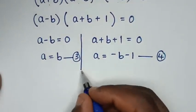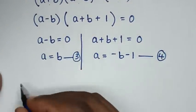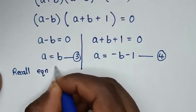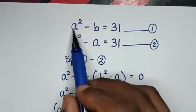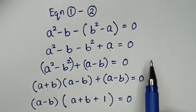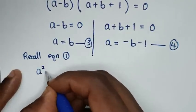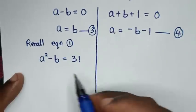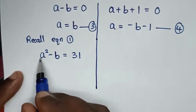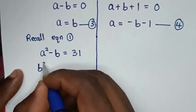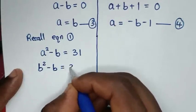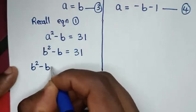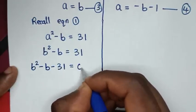Using equation 3 in the next step, we'll recall equation 1: a squared minus b equals 31. Since a equals b, we substitute b for a, giving b squared minus b equals 31. Taking 31 to the left side: b squared minus b minus 31 equals 0.